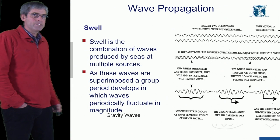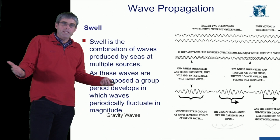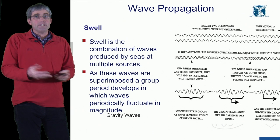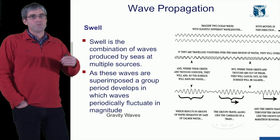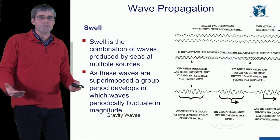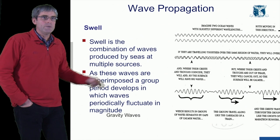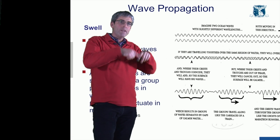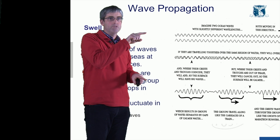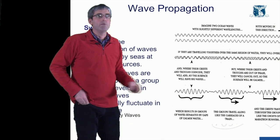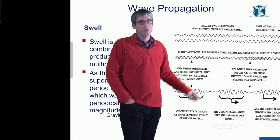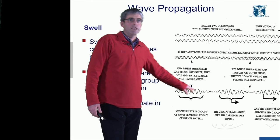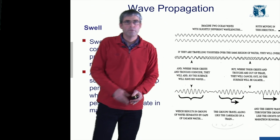Wave propagation occurs after the wind dies or waves pass out of a windy area. Swell is the combination of waves produced by sea, potentially from multiple sources. As these waves are superimposed, a group period develops in which waves periodically fluctuate in magnitude. Where waveforms and peaks line up, we get much bigger peaks and troughs; where they cancel each other out, we get very low amplitude waves. Anyone who has been surfing knows you wait for the big set — and then wait again as the next set comes through.